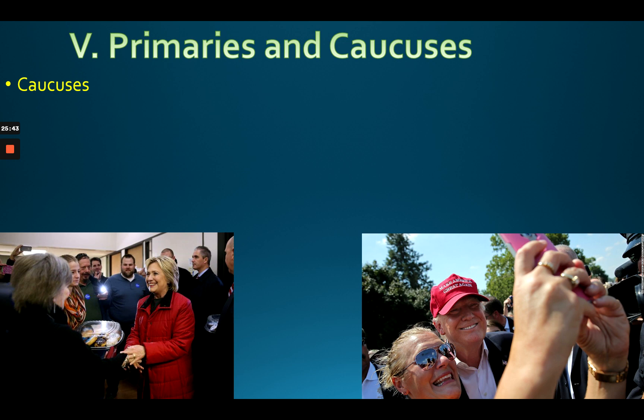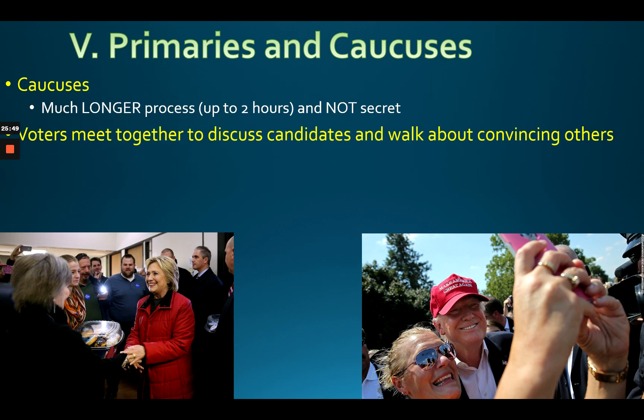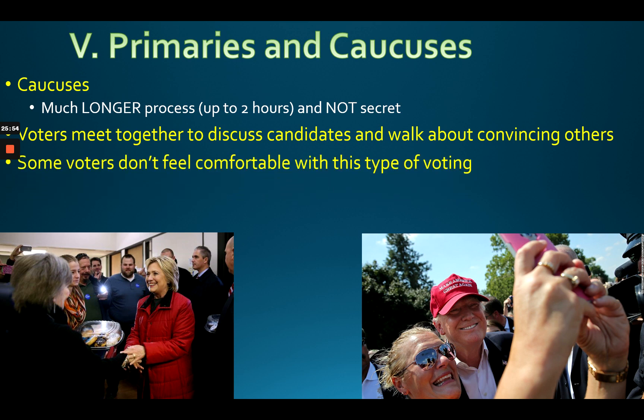Caucuses are more like an open town hall where you vote out loud, not in secret, and have an open debate. It works really well in small towns. For example, in 2024 Republican caucuses, they might debate whether to vote for Trump since he can only serve one more term due to the 22nd Amendment, which limits the president to two terms.